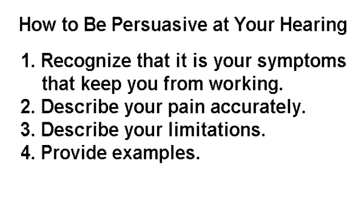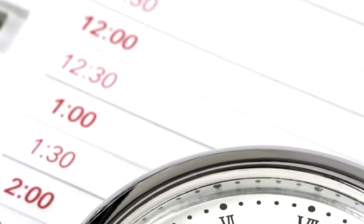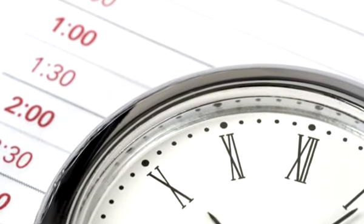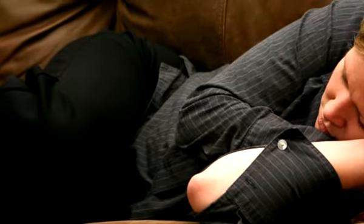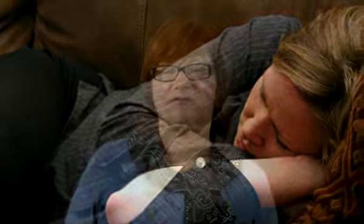Number four: provide examples. Pretend you are talking to an old friend who wants to be brought up to date on the problems caused by your impairment. Explain what you now have to do differently, going through a typical day almost hour by hour. How long are you active and how long do you rest? Do you rest sitting or lying down? What activities must other people help you with? Who are these people?